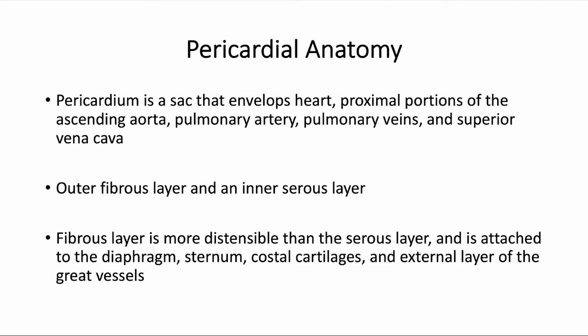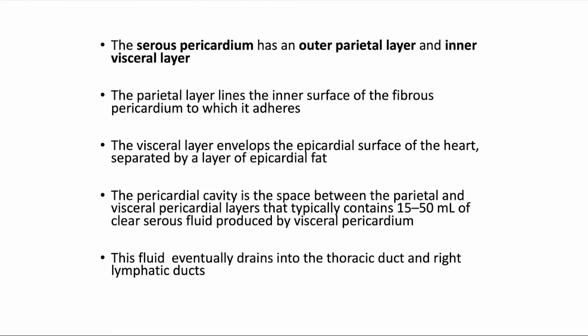Pericardium is a sac that envelopes the heart and the proximal portions of the great vessels. It has an outer fibrous layer and an inner serous layer. The fibrous layer is more distensible than the serous layer and is usually attached to the diaphragm, sternum, costal cartilages, and the proximal portions of the great vessels. The serous pericardium has an outer parietal layer and an inner visceral layer. The parietal layer lines the inner surface of the fibrous pericardium, and the visceral layer envelops the epicardial surface of the heart.